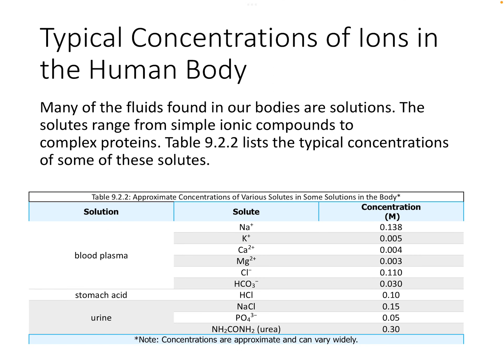I want to apply this to the human body. Our bodies are mostly made up of water with things dissolved in it. Some typical concentrations of different ions in blood plasma are listed — including sodium, potassium, calcium, magnesium, chloride, and bicarbonate ions, each with varying concentrations.